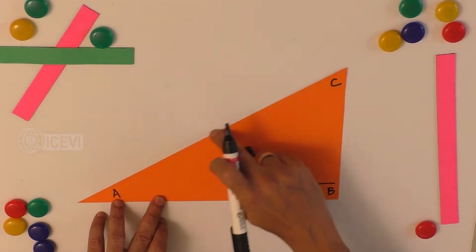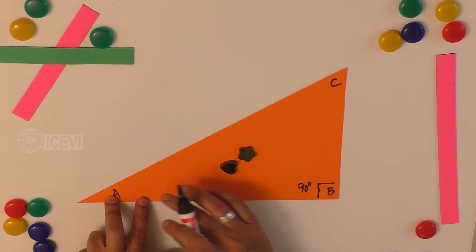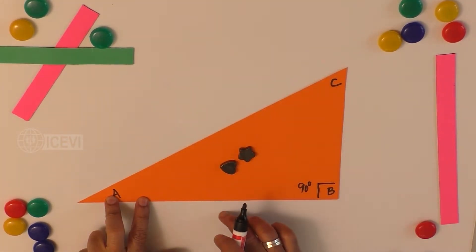As the three angles of a triangle put together will be equal to 180 degrees,